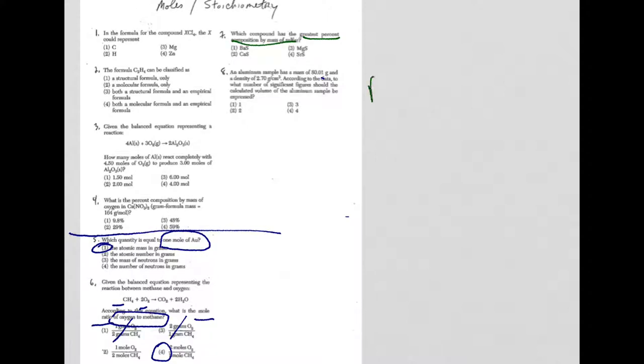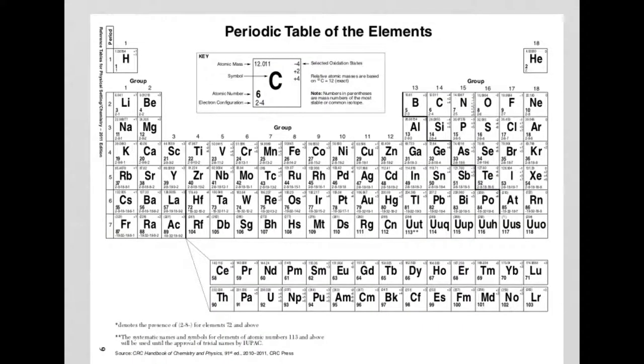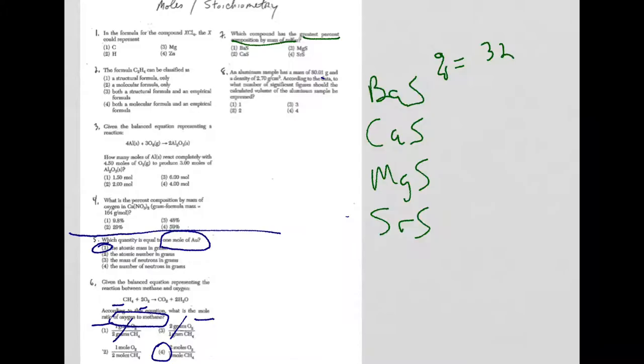Here we have, we're looking for the percent by mass of sulfur, but we're looking for the greatest percent by mass of sulfur. We have four compounds: barium sulfide, calcium sulfide, magnesium sulfide, and strontium sulfide. They're all 1 to 1 ratio.